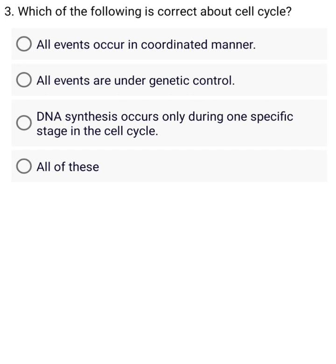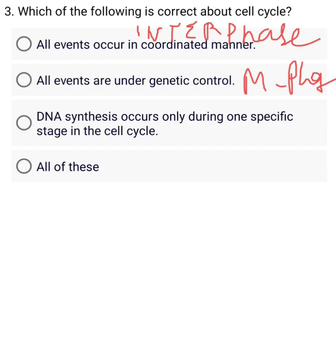A. All events occur in a coordinated manner. B. All events are under genetic control. C. DNA synthesis occurs only during one specific stage in the cell cycle.